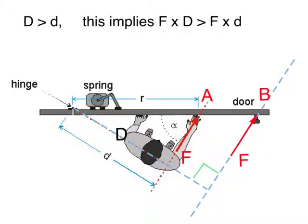Therefore, in order to give a bigger turning effect to the door so that I can open it more easily, I will apply the same force at point B. This is because applying the force at point B gives a bigger perpendicular distance in comparison to point A, which only gives a perpendicular distance of a smaller length. With a bigger perpendicular distance, I am going to have a bigger turning effect and open the door more easily.